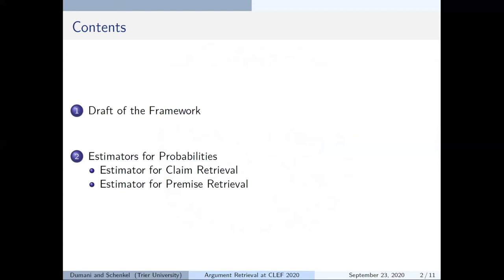Our ranking bases on a probabilistic framework. First I will explain the intuition behind it using an example. Roughly speaking, this framework comprises two components: on the one hand claim similarity and on the other hand argument quality, and after defining them we will explain estimators for these components.